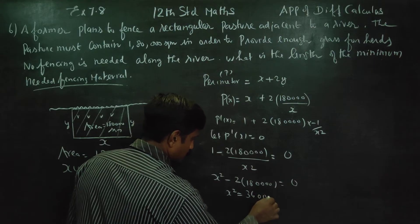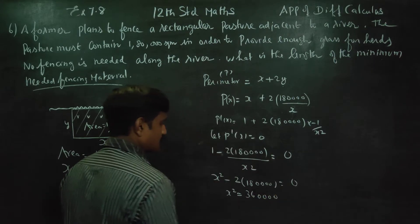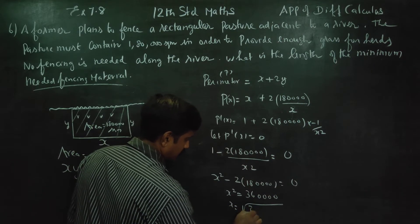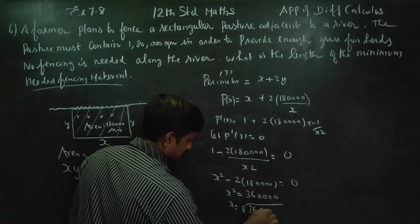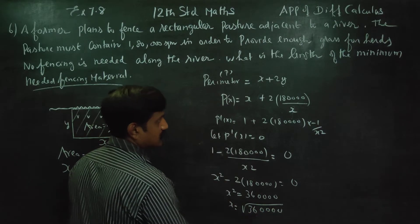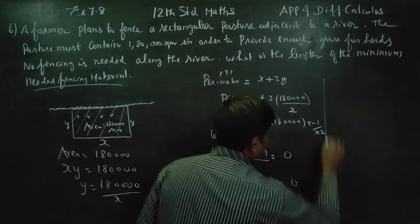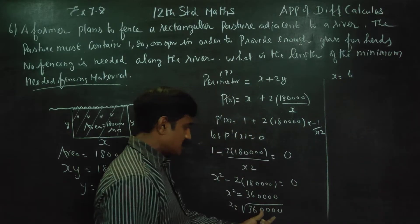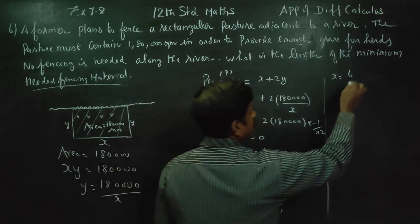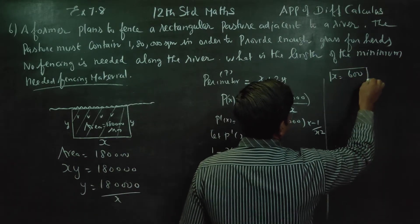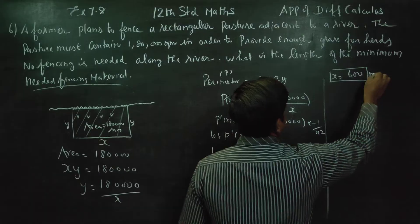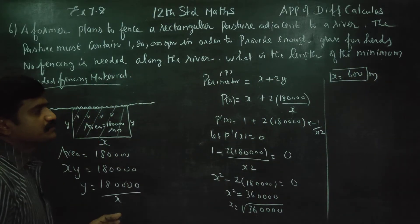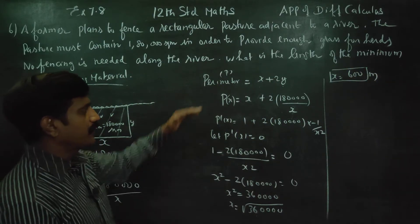x is equal to the square root of 3,60,000. Since 36 is 6 and there are four zeros, x is equal to 600 meters.